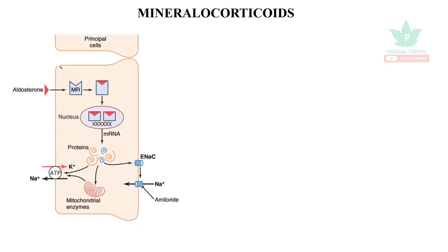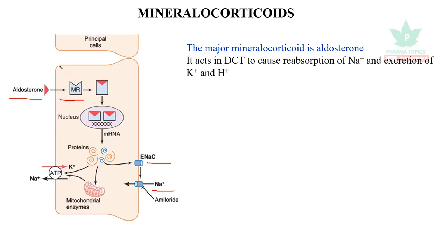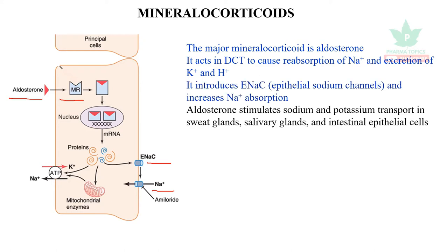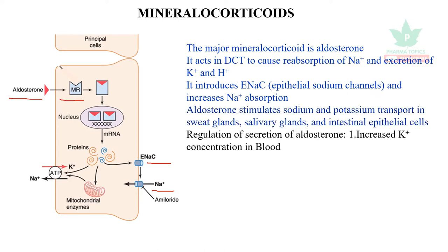The most important mineralocorticoid is aldosterone. It acts on mineralocorticoid receptors, enters into the nucleus, causes gene transcription, and generates an important channel called the epithelial sodium channel — also called amiloride-sensitive sodium channels. In the distal convoluted tubules, in the principal cells, aldosterone causes reabsorption of sodium and elimination of potassium and hydrogen. It also stimulates sodium reabsorption in sweat glands, salivary glands, and intestinal epithelial cells. Regulation of aldosterone involves increased potassium concentration in blood and the renin-angiotensin system.